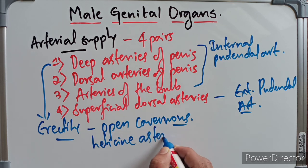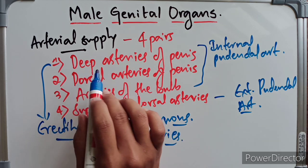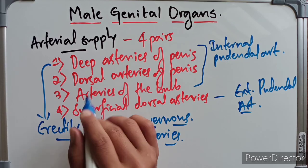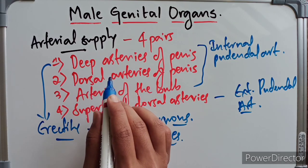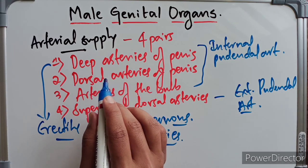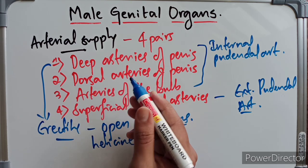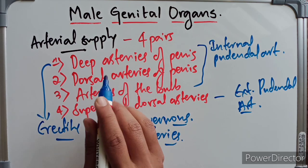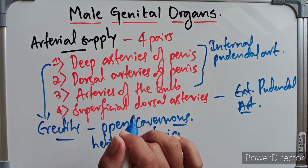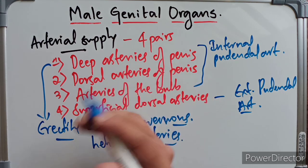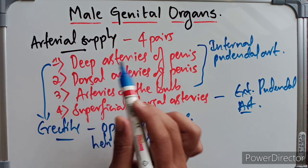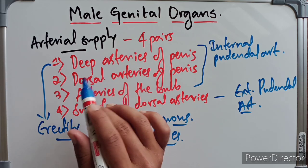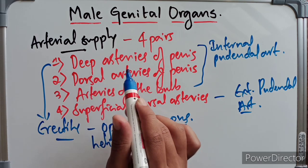The dorsal arteries run on the dorsal aspect of the penis and supply the glans penis and the distal part of the corpus spongiosum, as well as the prepuce and the frenulum. The arteries of the bulb supply the bulb and proximal half of the corpus spongiosum. The superficial external pudendal arteries supply the skin and fascia of the penis.